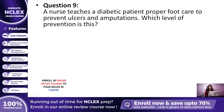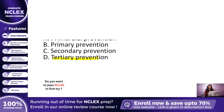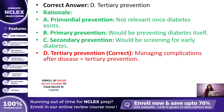Question 9: A nurse teaches a diabetic patient proper foot care to prevent ulcers and amputations. Which level of prevention is this? The correct answer is D — Tertiary prevention. Because the disease — diabetes — already exists, and the nurse is preventing complications and disability through rehabilitation-style teaching.